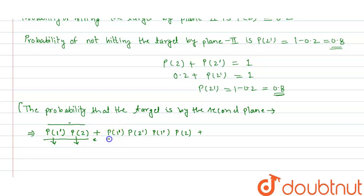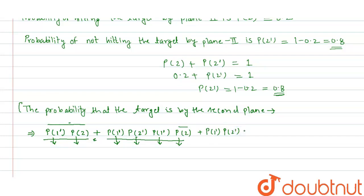The other possibility: in the first attempt, plane 1 misses and plane 2 also misses (probability P2 dash). Then in the second attempt, plane 1 misses again, and plane 2 hits the target (probability P2). Further, in the first attempt plane 1 misses, plane 2 misses; in the second attempt plane 1 misses, plane 2 misses again; in the third attempt plane 1 misses and plane 2 hits. These possibilities go on continuously.